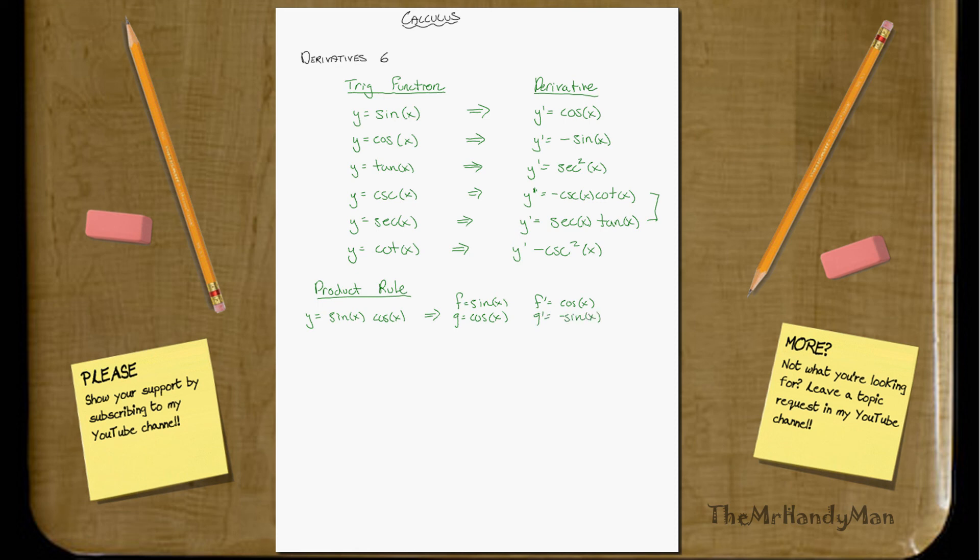And then basically, you can use your product rule just the same way you did before. So y prime equals f prime g plus f g prime.